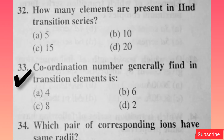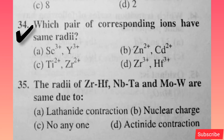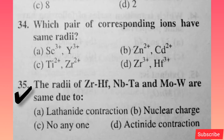Coordination number generally found in transition elements — option D is right. Which pair of corresponding ions have the same radii? Option D is correct. The radii of Zr, Hf, Nb, Ta, Mo, and W are the same due to lanthanide contraction — option A is right.